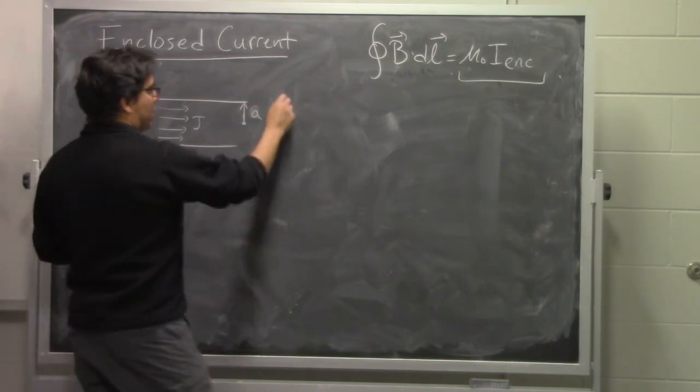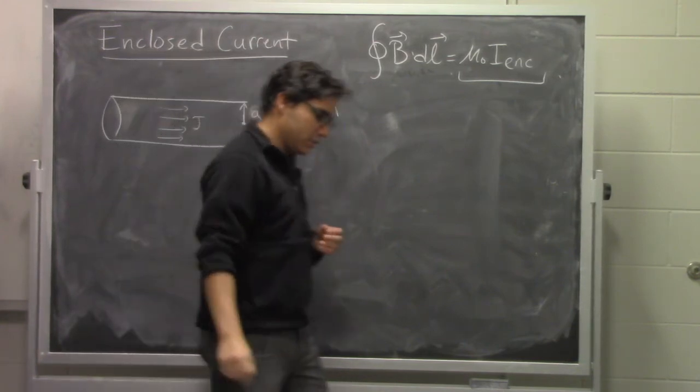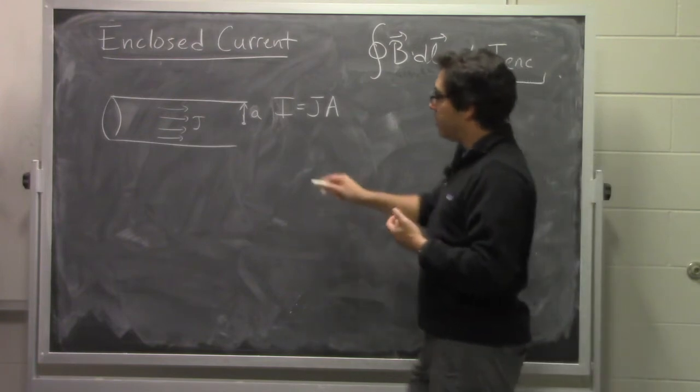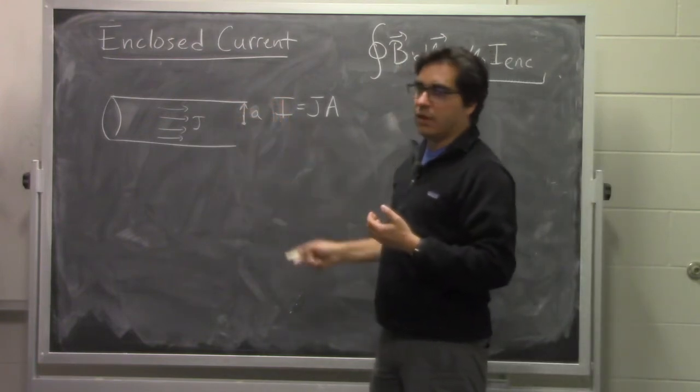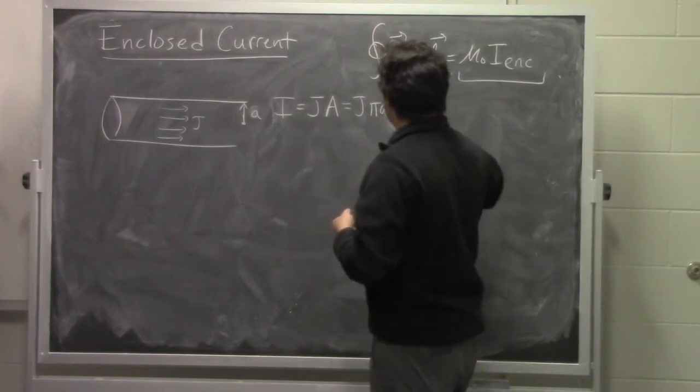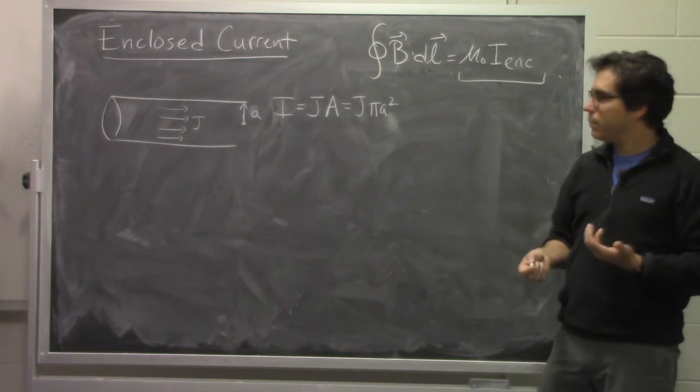And so the total amount of current that runs through that wire is equal to the current density times the cross-sectional area associated with the particular wire. And in this case, if the wire has a radius of a, that means that the total current that we are going to see is going to be equal to the current density times pi a squared.